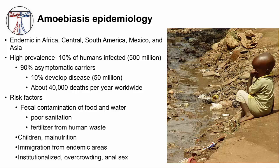As with other diarrheal diseases, incidence is higher in children compared to adults and is worse in malnourished children. Overcrowding, especially in institutions, are also risk factors. In developed countries, amoebiosis is often seen in immigrants coming from endemic areas. Amoebiosis is also a potential disease from anal sex in men who have sex with men.